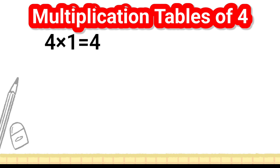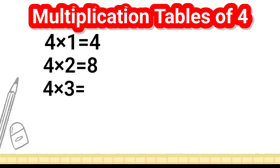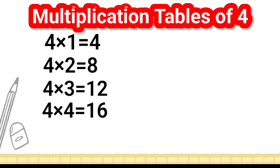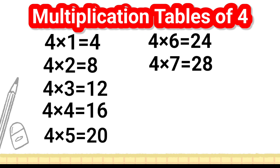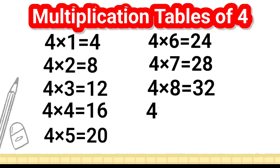4 1's are 4, 4 2's are 8, 4 3's are 12, 4 4's are 16, 4 5's are 20, 4 6's are 24, 4 7's are 28, 4 8's are 32, 4 9's are 36, 4 10's are 40.